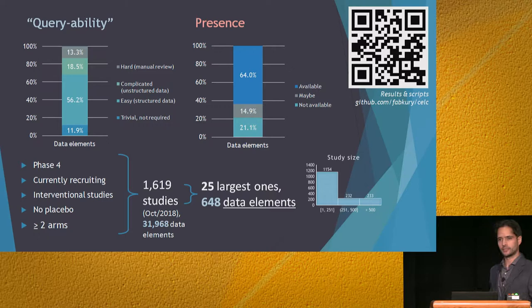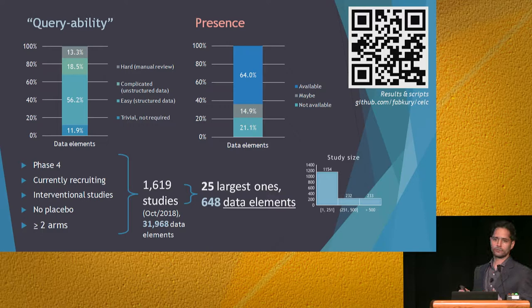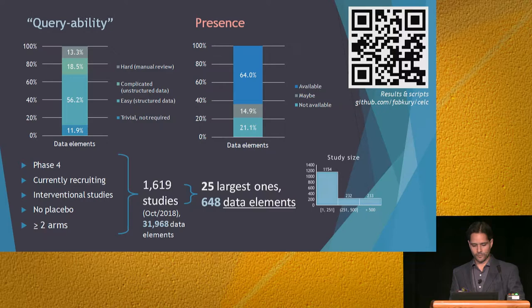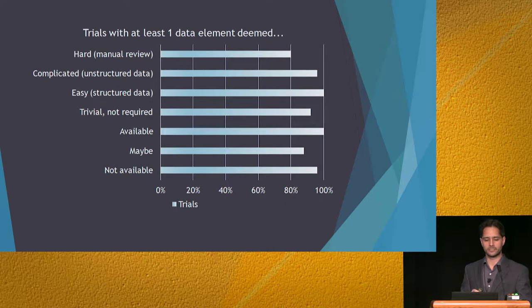With that in mind, I appraised 648 individual data elements from the 25 largest phase studies among currently recruiting interventional studies in clinicaltrials.gov that do not involve placebo and have at least two study arms — a universe of 1,600 studies. One in seven data elements was hard, and one in five was not available. The studies had on average 25 data elements each, and most of them had at least one data element of each type, but not all of them.